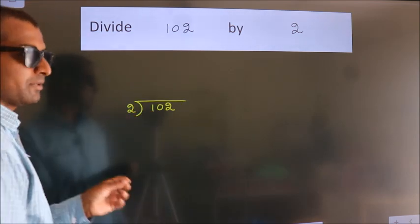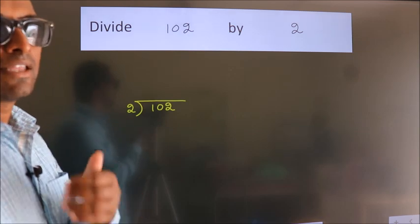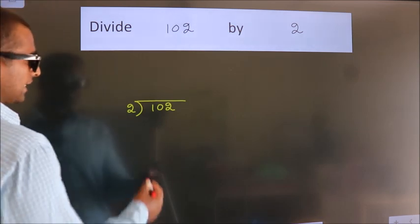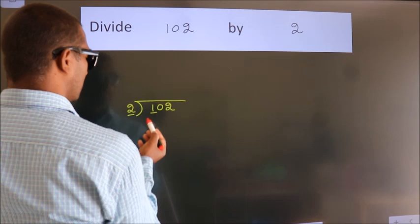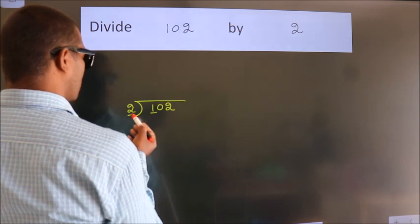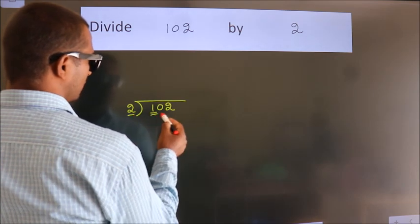This is your step 1. Next, here we have 1, here 2. 1 is smaller than 2, so we should take 2 numbers: 10.